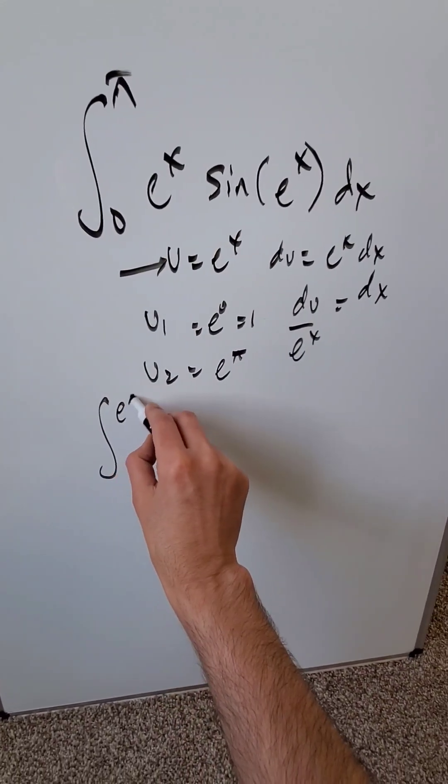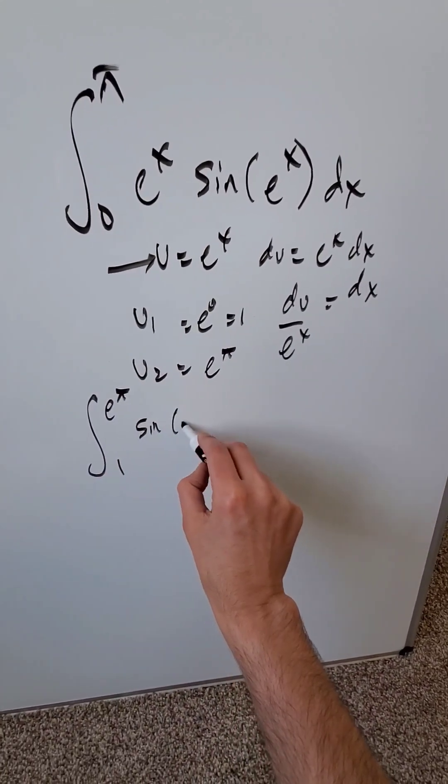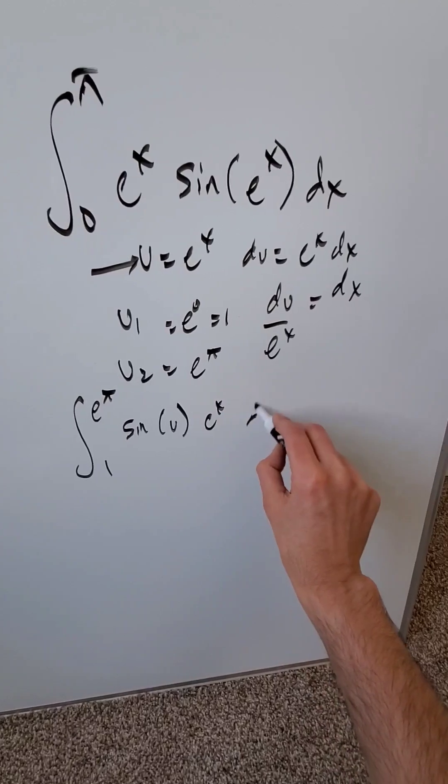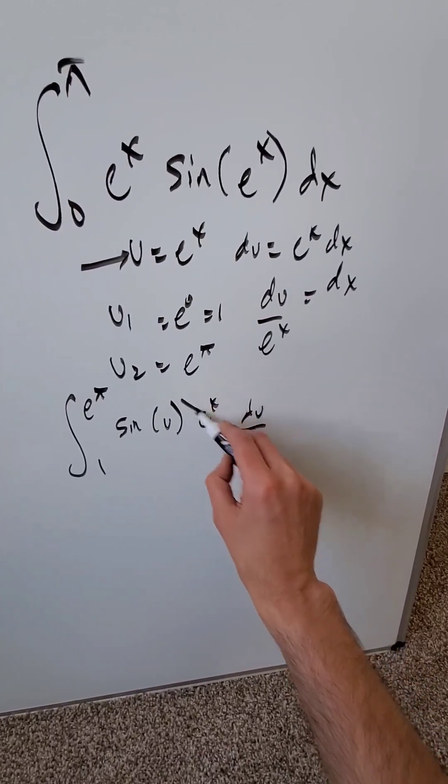Now my integral is from 1 to e to the pi of sine u. I have an e to the x, then I have a du over e to the x. These cancel out.